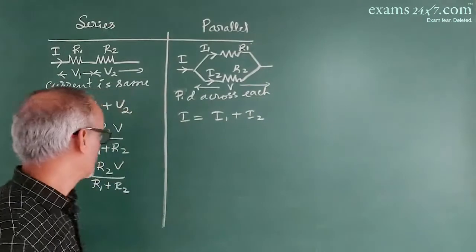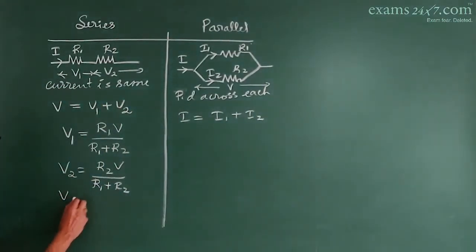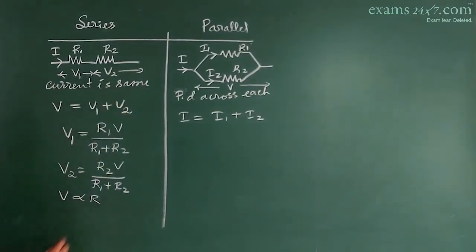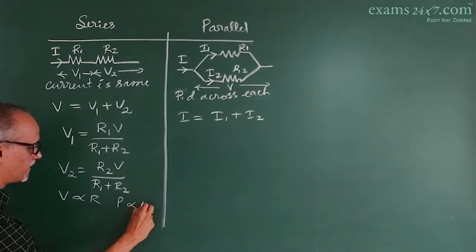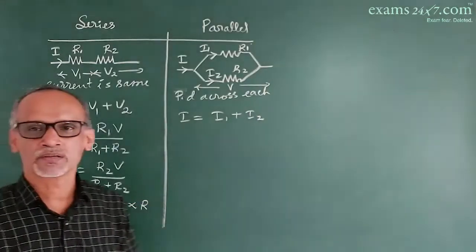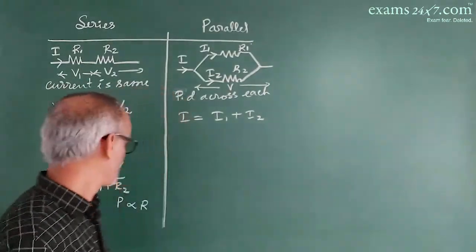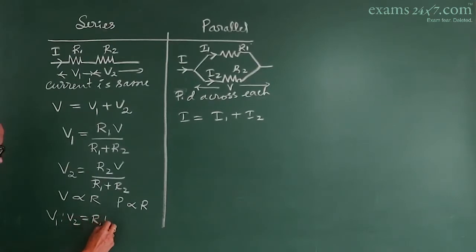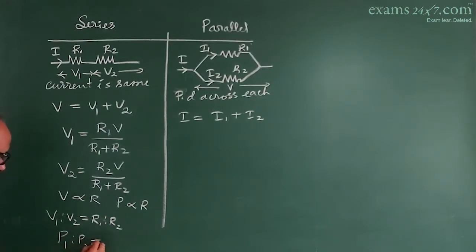V is directly proportional to R because current is the same in series. Similarly, power P is directly proportional to R since P equals I²R and I is the same. Therefore the ratio V1 to V2 equals R1 to R2, and the ratio of power consumed P1 to P2 also equals R1 to R2.